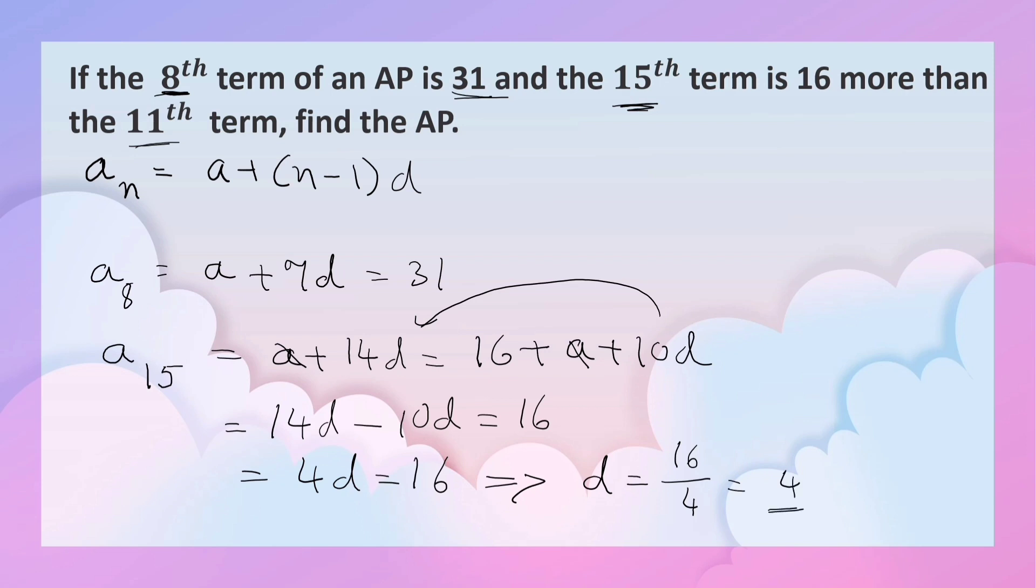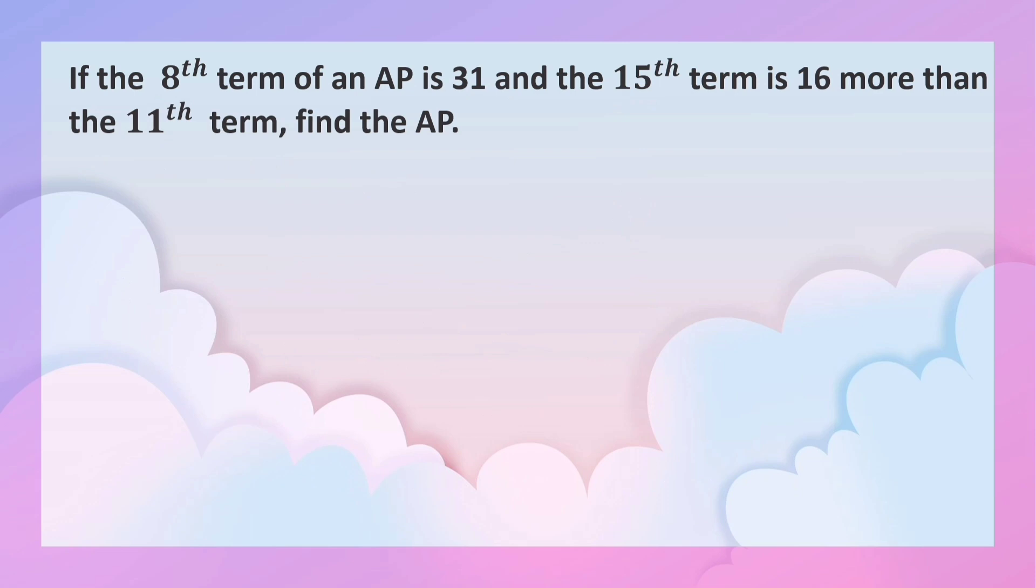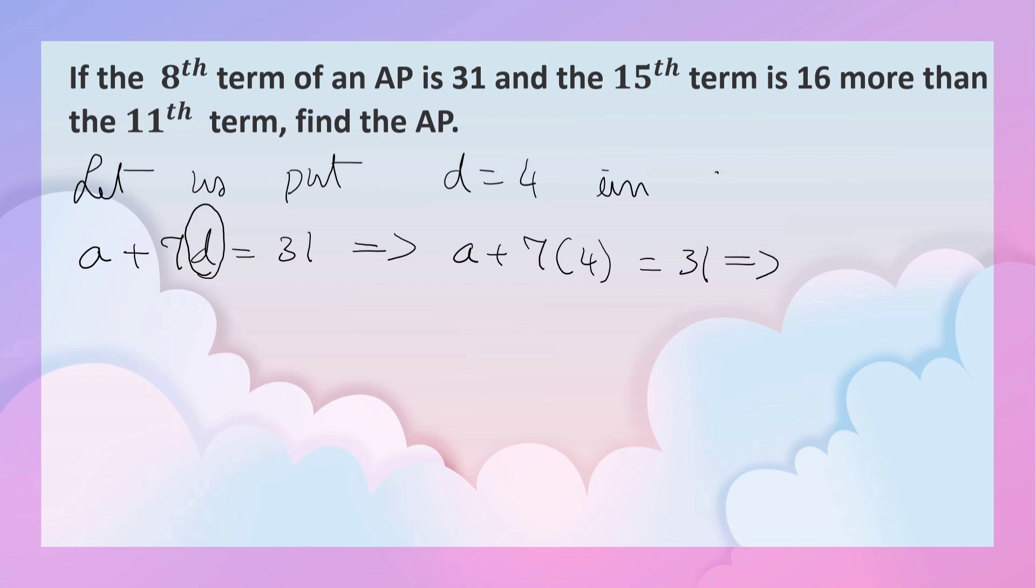Now we can substitute the values in equation 1. Let us put d equals 4 in a plus 7d equals 31. Instead of d, we put 4. This gives a plus 28 equals 31. So a equals 31 minus 28, which is 3.